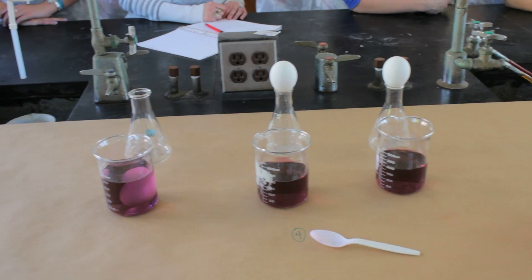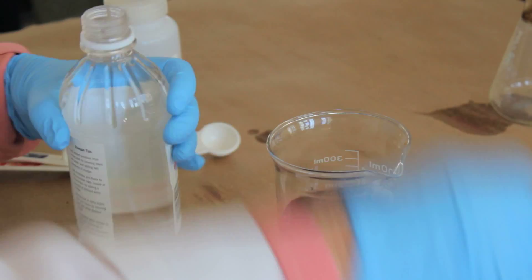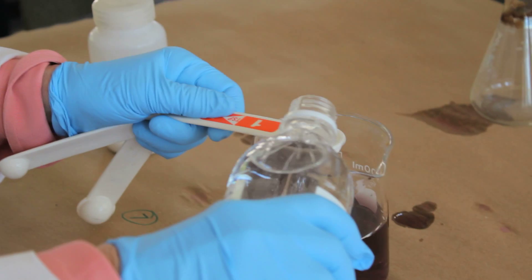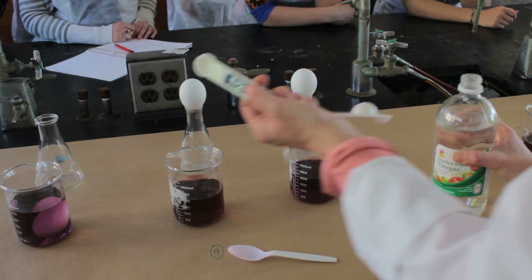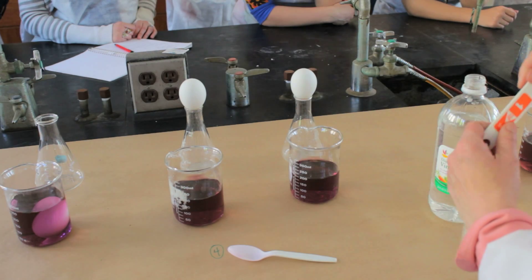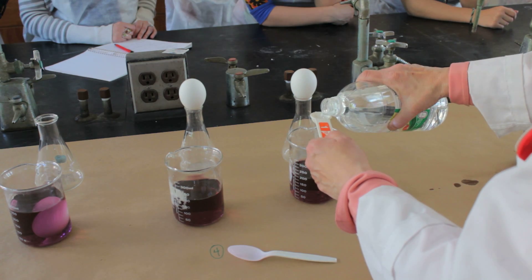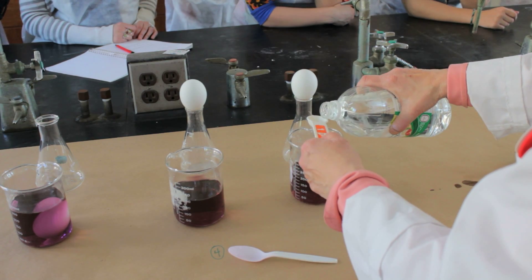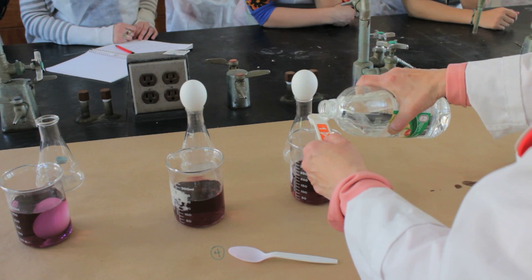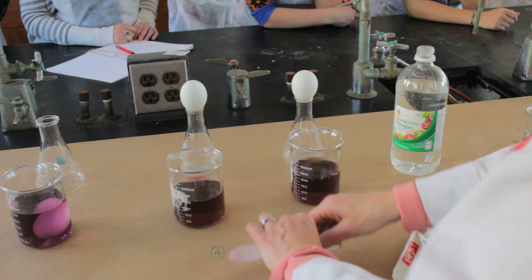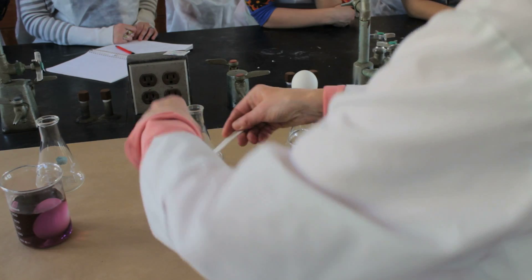On the next one, we're going to put in half a teaspoon of vinegar. On the last one, we'll put in one tablespoon, which equals three teaspoons. And we'll lower the eggs into all three of the dye baths.